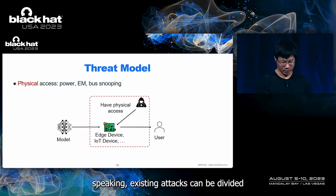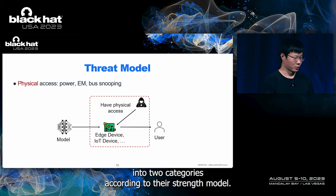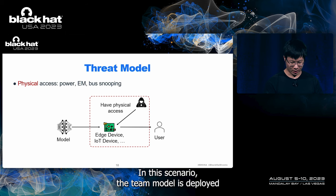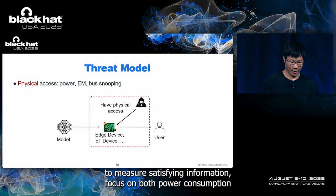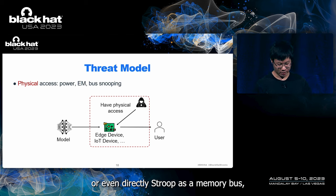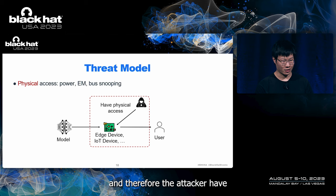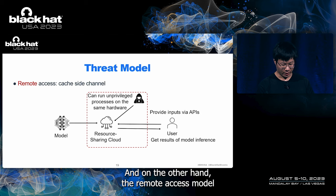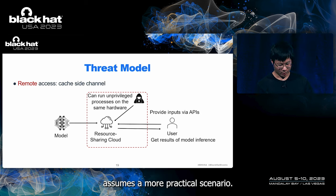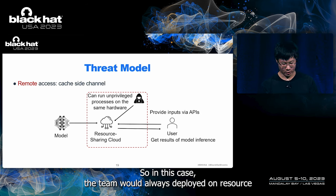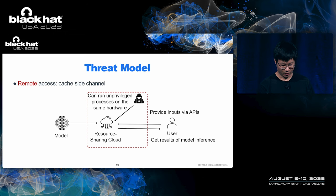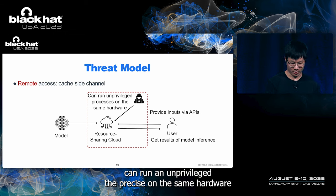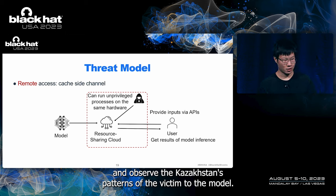Existing attacks can be divided into two categories. The first is the physical access model, where the DN model is deployed in devices accessible to the attacker, who can use special equipment to measure side-channel information — for example, power consumption — or directly snoop the memory bus, giving a quite strong ability to attack. The second is the remote access model, which assumes a more practical scenario: the DN model is deployed on resource-sharing clouds, where the attacker and user may share the same CPU core and cache. The attacker can run an unprivileged process on the same hardware and observe cache access patterns of the victim DN model.